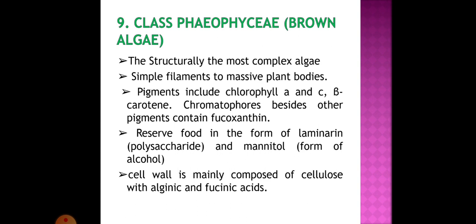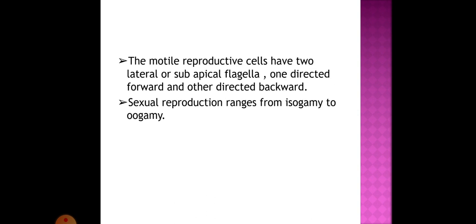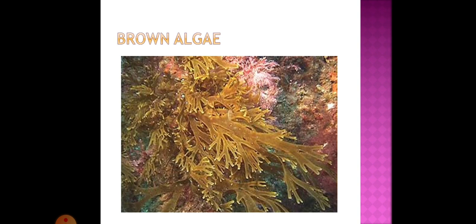Ninth class is Phaeophyceae, also known as brown algae — structurally the most complex algae, ranging from simple filaments to massive plant bodies. Pigments include chlorophyll A and C, beta-carotene, and fucoxanthin. Reserve food is in the form of laminarin, a polysaccharide, and mannitol, an alcohol. The cell wall is mainly composed of cellulose with alginic and fucinic acids. Motile reproductive cells have two lateral or sub-apical flagella, one directed forwards and the other backwards. Sexual reproduction ranges from isogamy to oogamy.